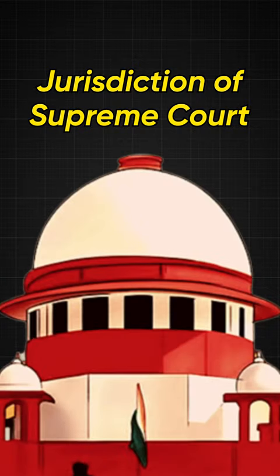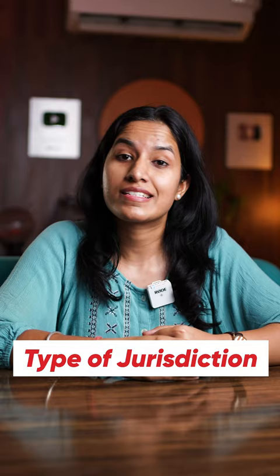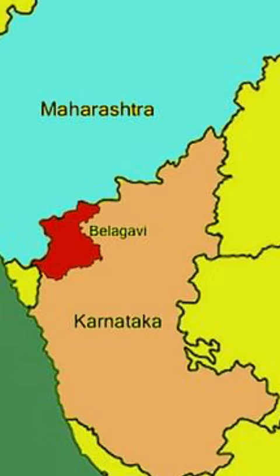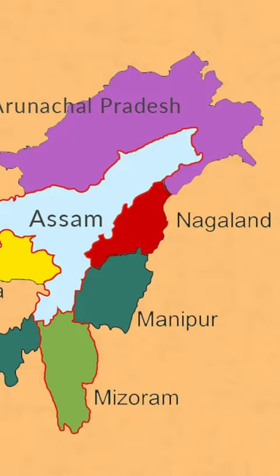Let's talk about the jurisdictions of the Supreme Court today. There are four types of jurisdictions. Starting with the first one: original jurisdiction. If there is a dispute between the centre and the states, or between two or more states, then they can approach the Supreme Court under Article 131 of the Constitution.